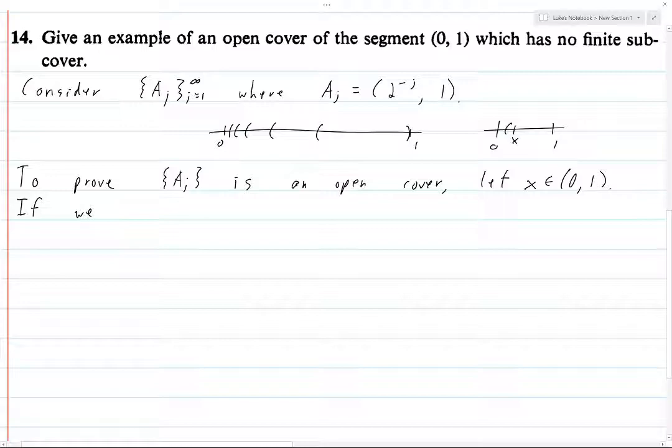So if we choose j large enough, and here's sort of what we need to do to make this specific. We need 2 to the power of j to be greater than 1 over x. Or we can write this as 2 to the j is greater than x to the power of minus 1. Then what we have is 2 to the minus j is going to be less than x, and so x is in a j.